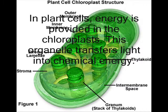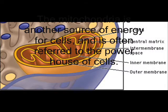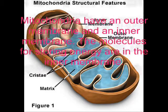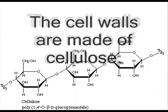In plant cells, energy is provided in the chloroplasts. This organelle transfers light into chemical energy. The mitochondria is another source of energy for cells and is often referred to as the powerhouse of the cell. Mitochondria have an outer membrane and an inner membrane. The molecules for storing energy are in the inner membrane. The outer membrane contains porin, which renders it permeable.